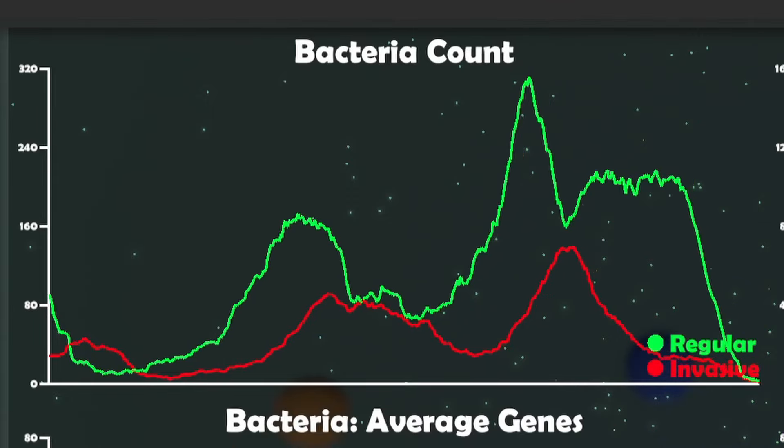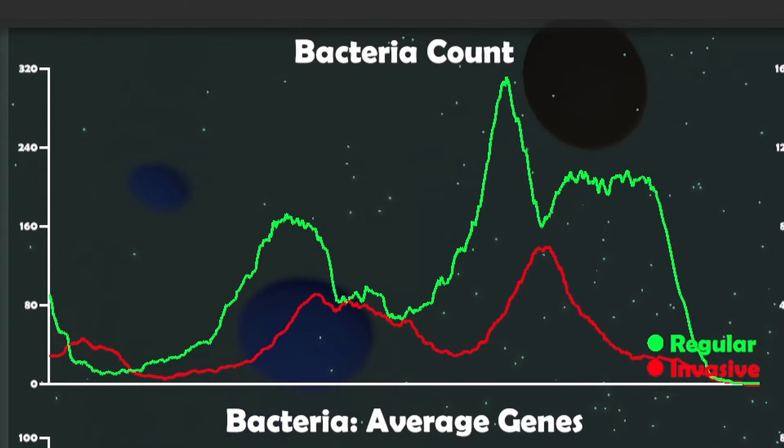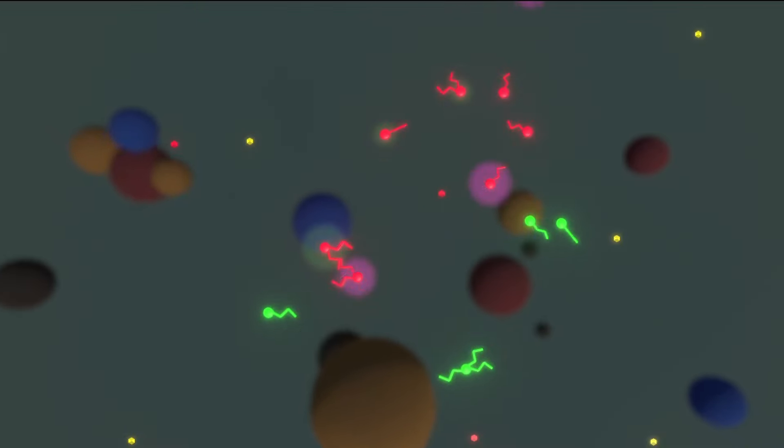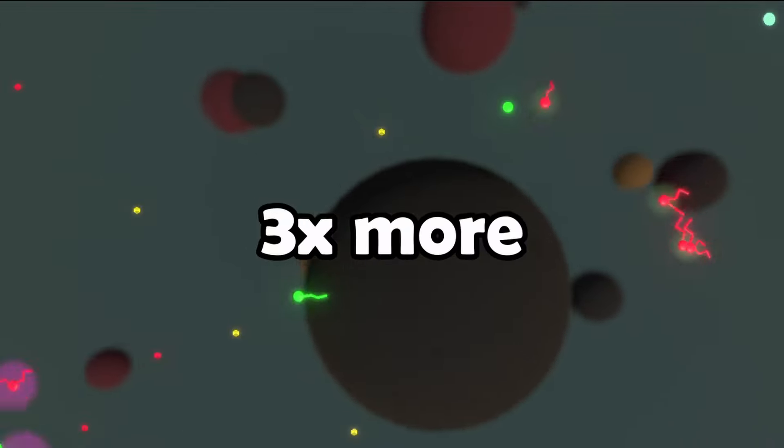Even with this balance, it looked like the bacteria were still having a very tough time, where you can see that both the regular and the invasive bacteria were getting wiped out by the viruses almost instantly. So in order to give the bacteria a little bit more of a boost, I made all their foods three times more effective.